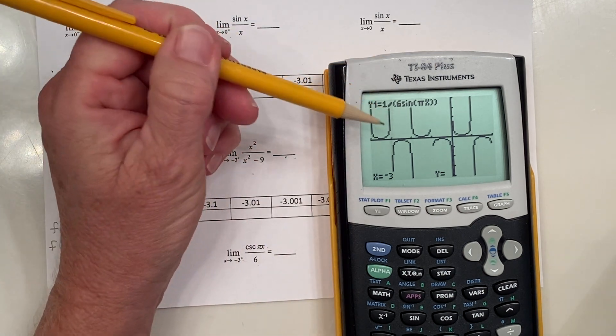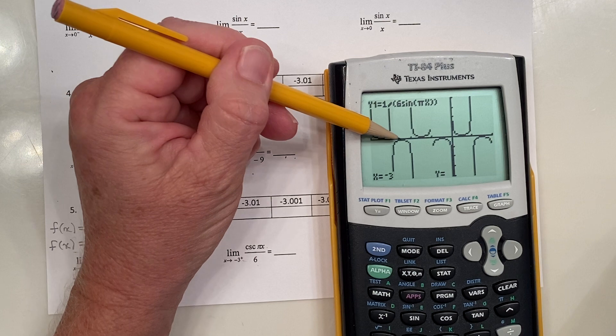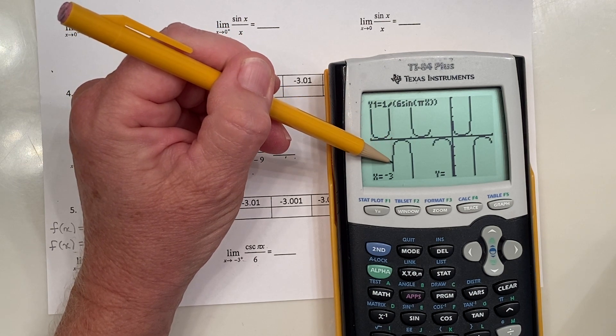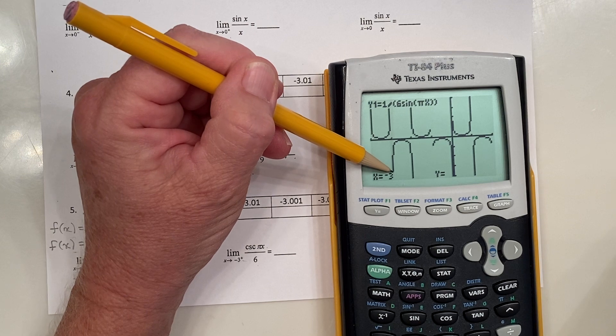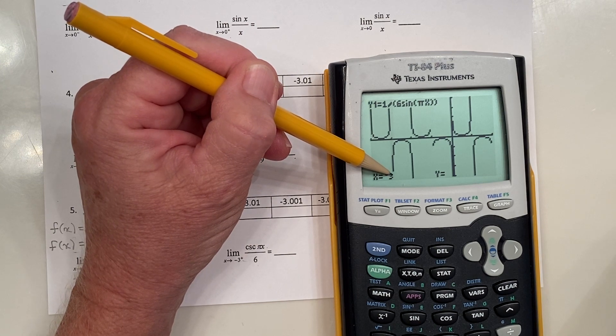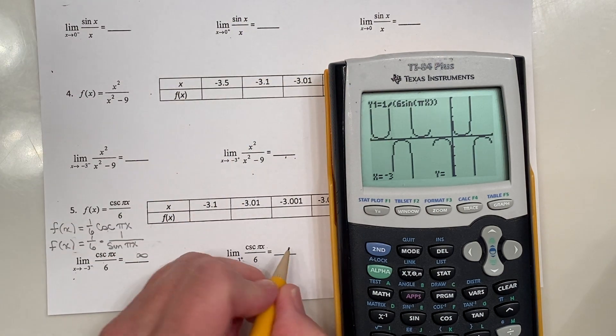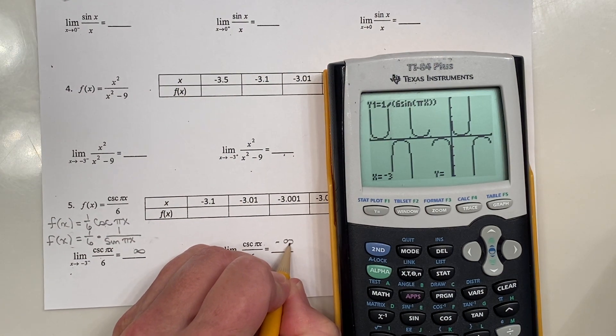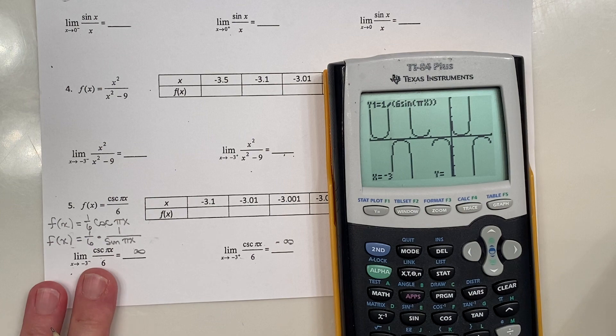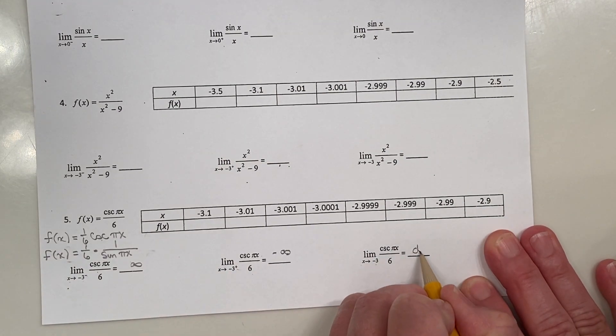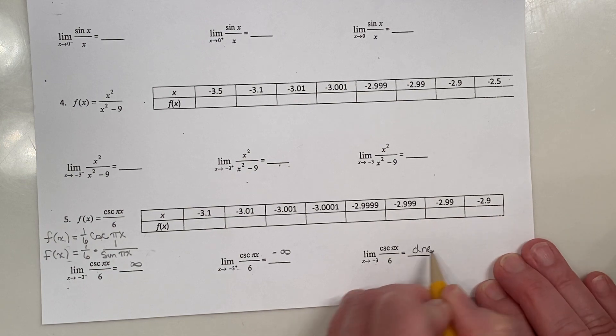What if you approach negative three from the right? So here's negative three to the right is over here. If I get on the graph, but start moving, because remember approaching means you got to keep moving. Functional value means you keep your feet planted at that x value. Well, it looks like I'm going to negative infinity. I'm just going to kind of lightly write this in. So what would that tell us then about the limit as x approaches negative three? Well, the answer would have to be does not exist.